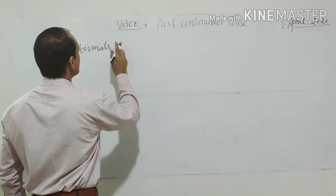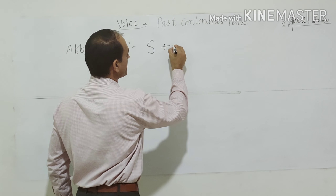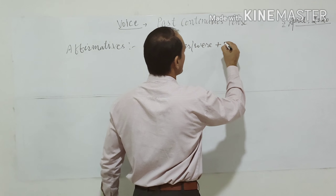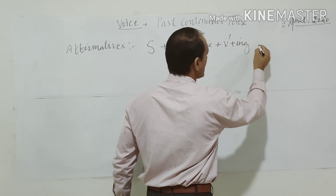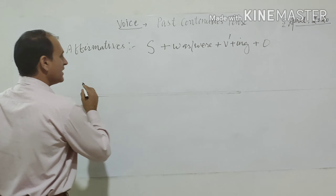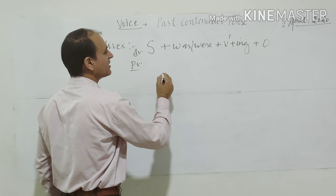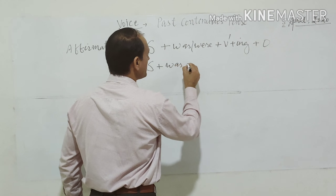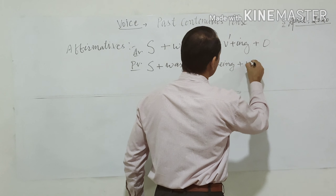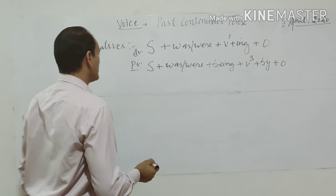In an affirmative sentence in past continuous, we begin with subject followed by helping verb 'was' or 'were', closely followed by the main verb with 'ing', and at last we put the object. In passive voice, the structure becomes: subject plus 'was' or 'were' plus 'being', followed by the third form of the verb, then preposition 'by', and then the object.